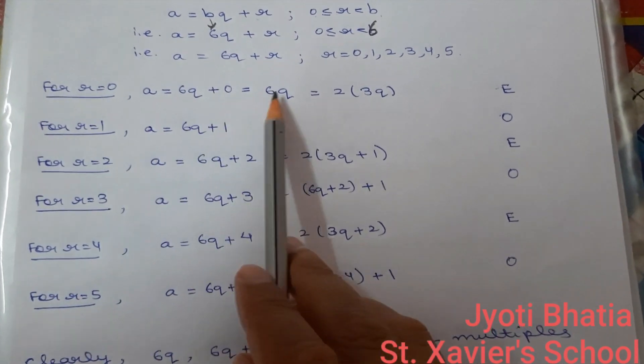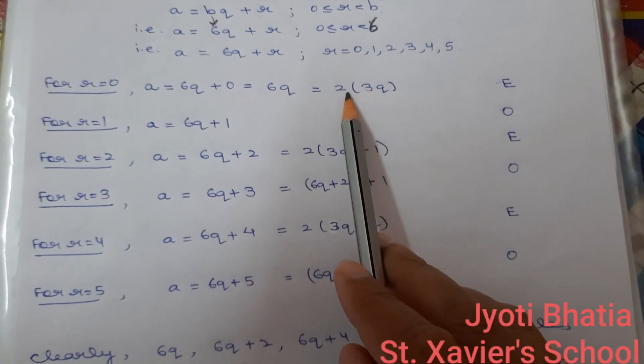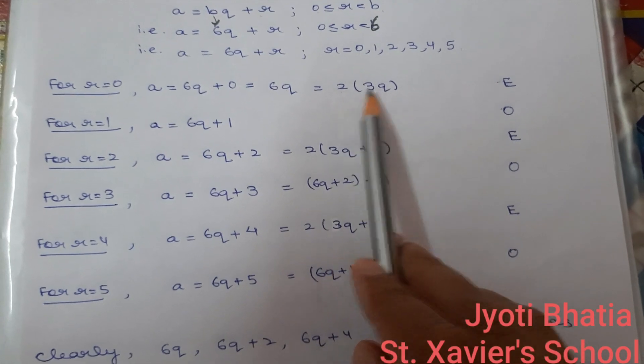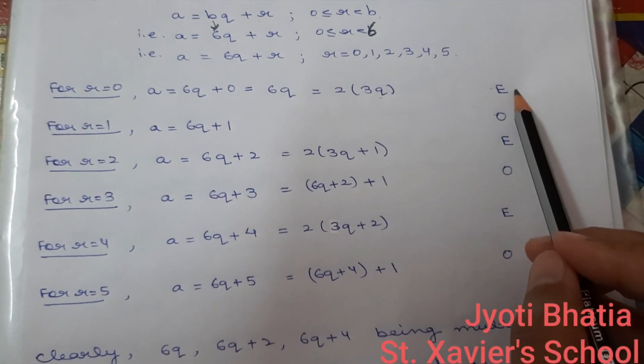For R equal to 0, A is equal to 6q. Taking 2 common, we can see that it is a multiple of 2. So, it is an even number.